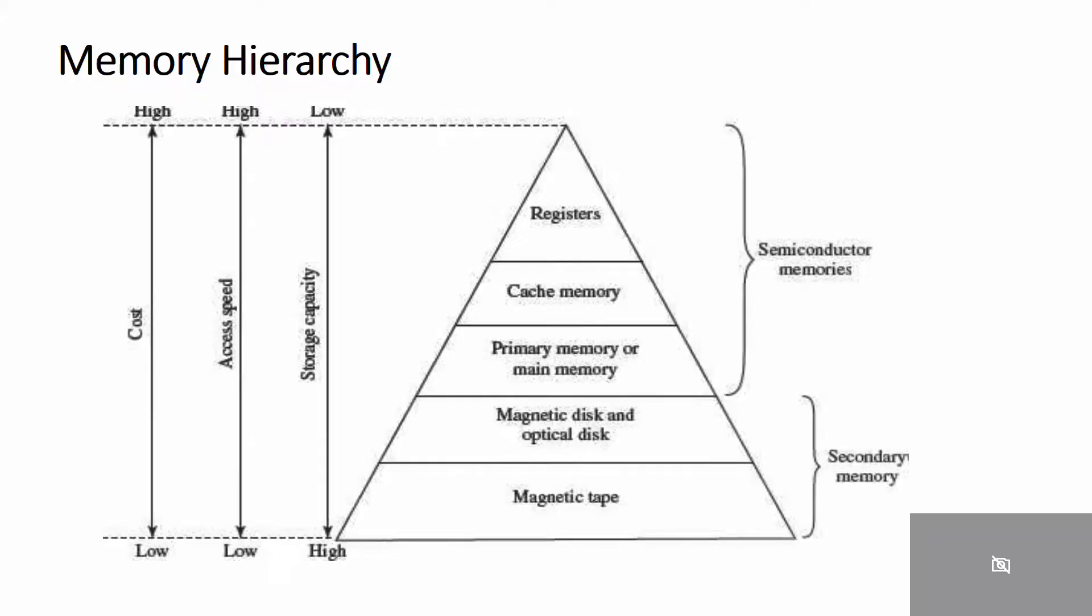As you see in the figure, the components in a typical memory hierarchy: at the bottom are magnetic tape used to store removable files. Next are magnetic disks used as backup storage. The main memory occupies a central position by being able to communicate directly with the CPU and auxiliary memory devices through input/output processes. Programs not currently needed in main memory are transferred into auxiliary memory to provide space for currently used programs and data.